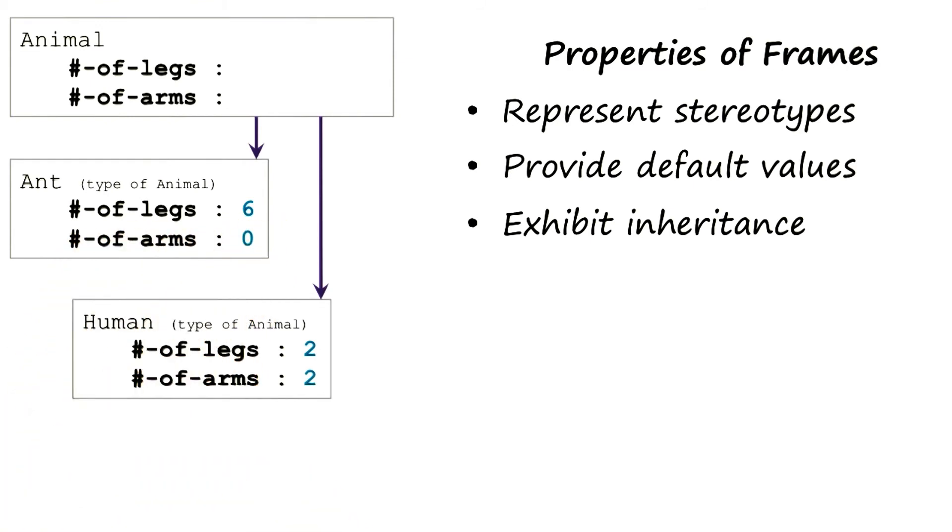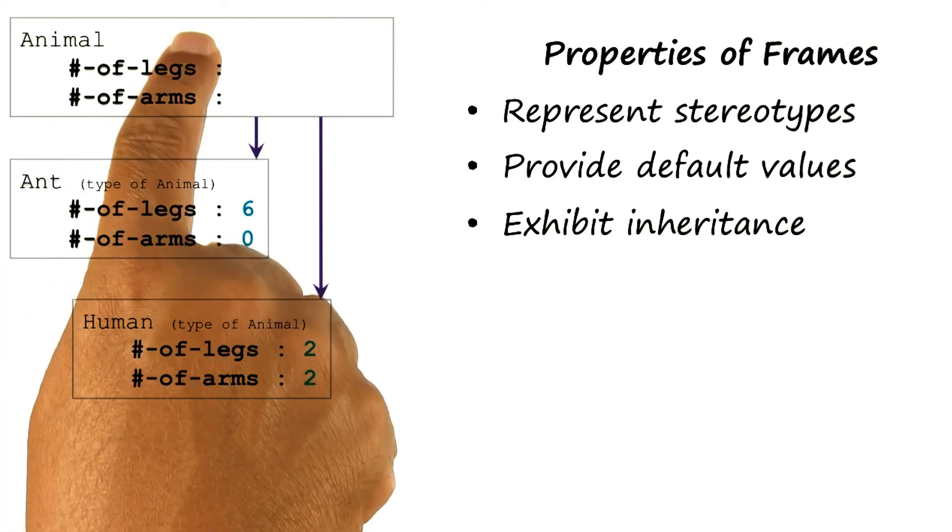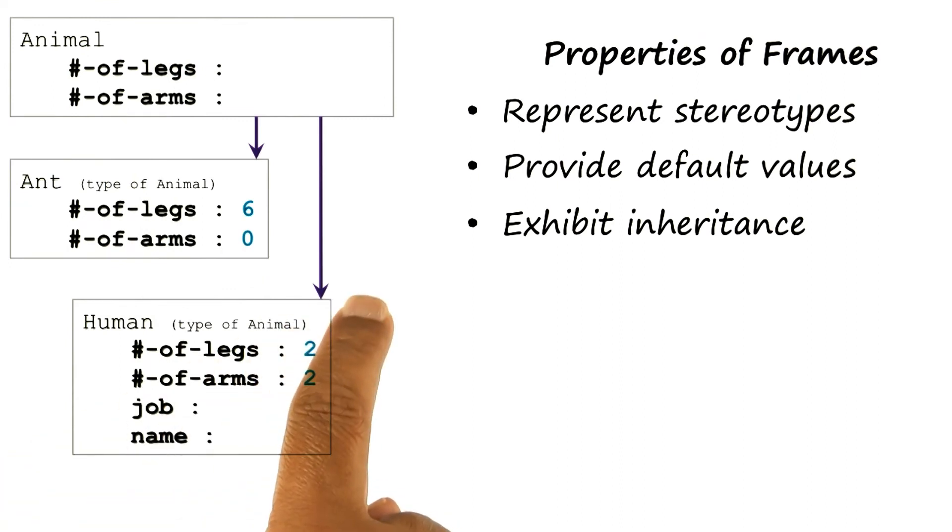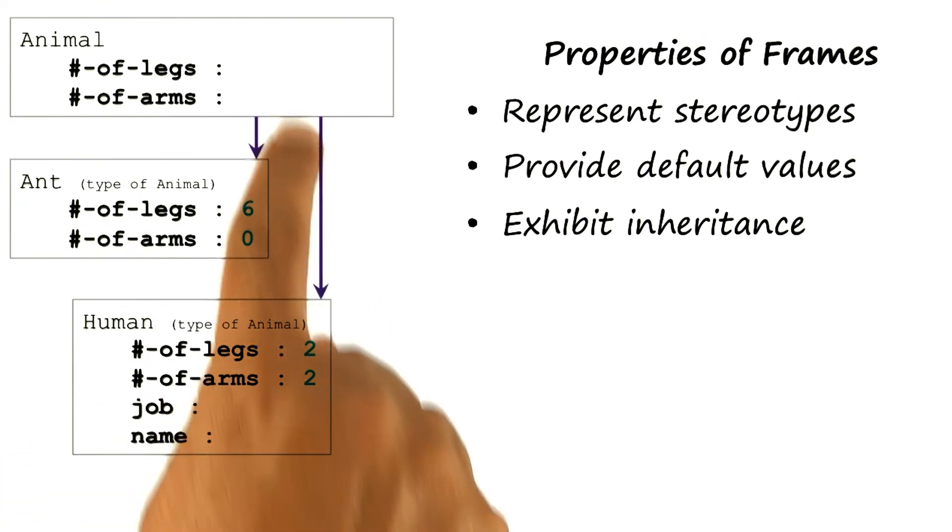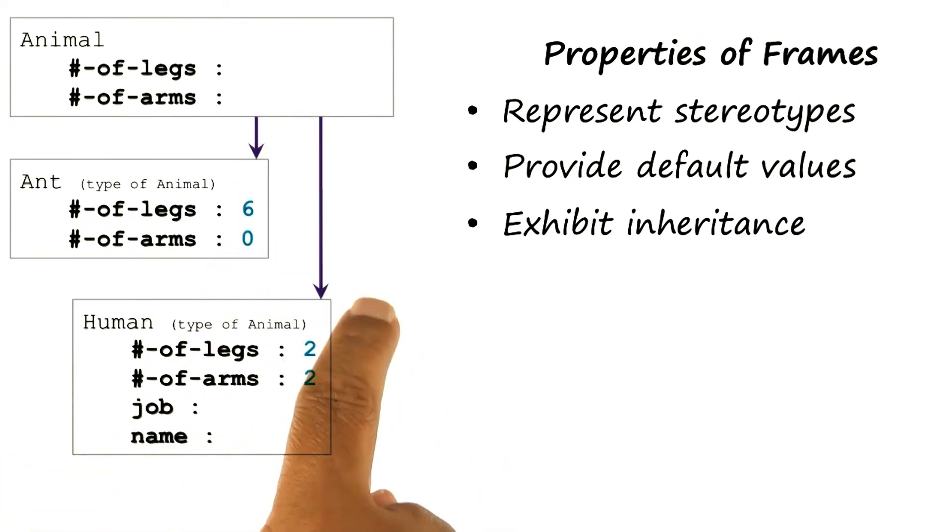For example, number of legs is six, or the number of arms is zero. But the important thing is that I inherited these slots from the superclass. Of course, when I specify the subclasses, when I go down this frame hierarchy, I may keep on adding additional slots. So for a human, I may also add the job and the name.